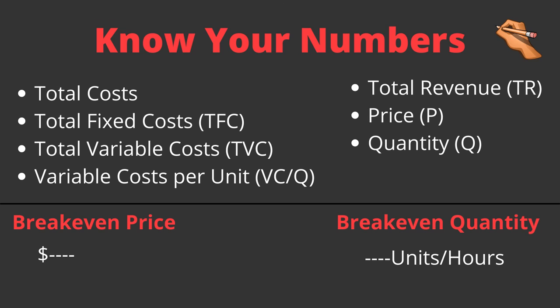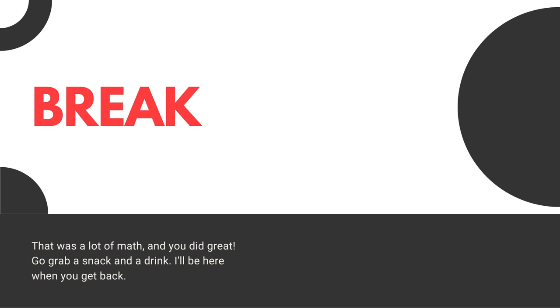It's all about knowing your numbers. You have to know your total costs — total fixed costs plus total variable costs — and your variable cost per unit, which is your variable costs divided by the number of units you're selling. There's a lot of math, but hopefully you made it through. Feel free to email Adam at AdamTedro.com — there's a service to help you walk through the breakeven process. Take a break and come back, because we're going to finish up the seven page business plan in just a couple more slides.